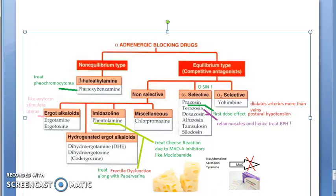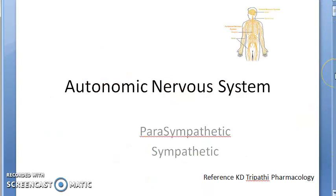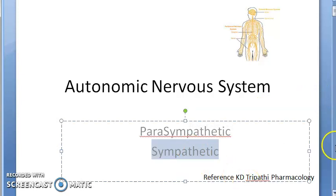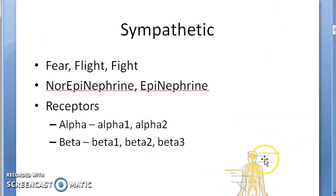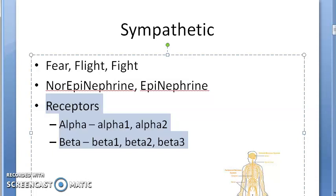Welcome. We want to look at anti-adrenergic drugs. So far we have seen cholinergic drugs, anticholinergic drugs, and adrenergic drugs. Now we want to look at anti-adrenergic drugs. We are looking at the autonomic nervous system — parasympathetic and sympathetic. Currently we are in the anti-sympathetic or sympatholytic drugs. The receptors are alpha or beta, and in that you can have alpha blockers or beta blockers.